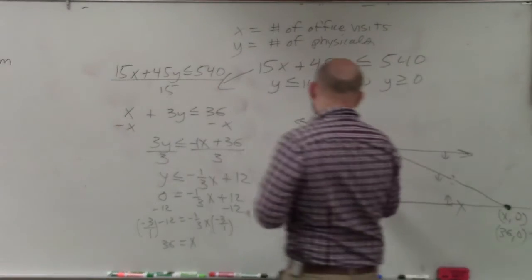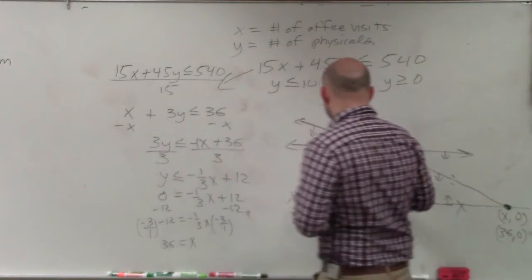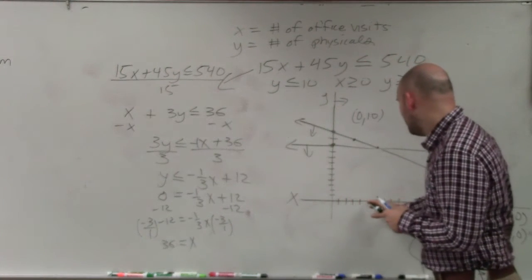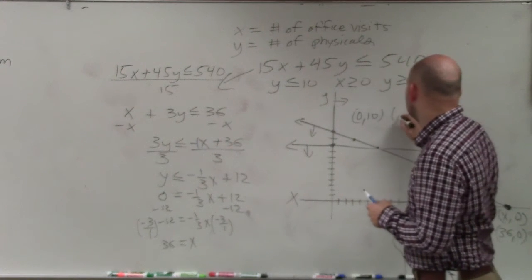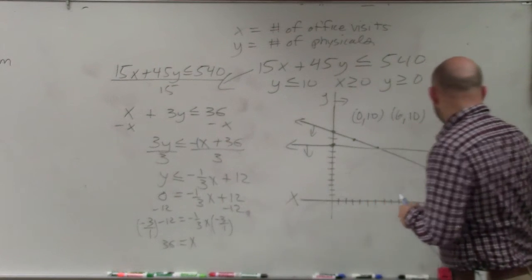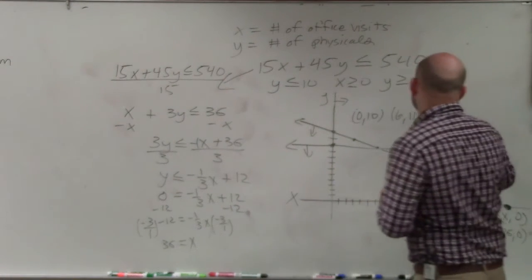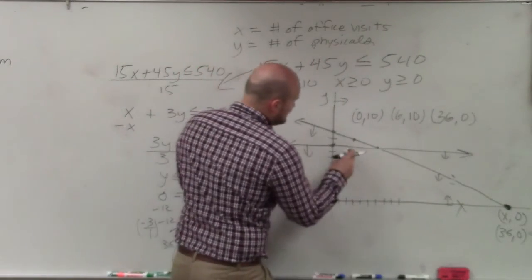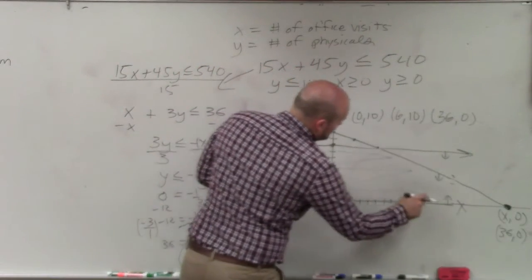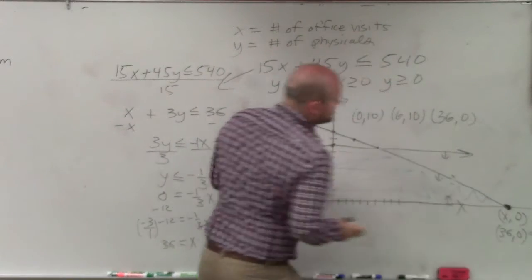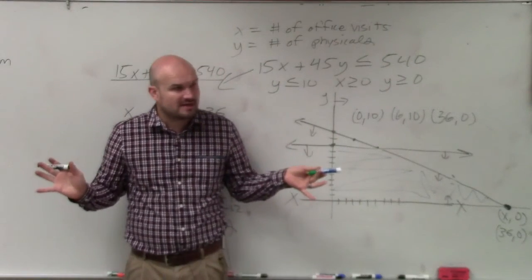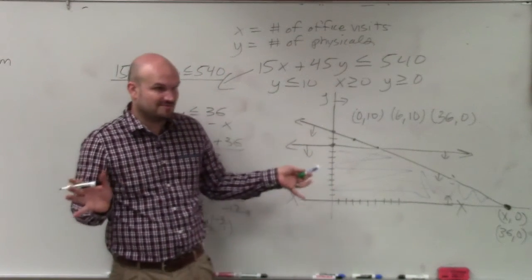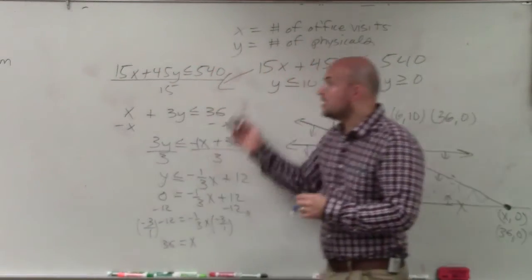So my vertices here, I have 0 comma 10, I have 6 comma 10, and I have another vertex of 36 comma 0. So I have three vertices, because here's my feasible region. Does everybody see how that's my feasible region? Anybody have any questions on that? No. Okay. So everybody follows me with this. I know the graphing was a little bit hard in creating the equation.